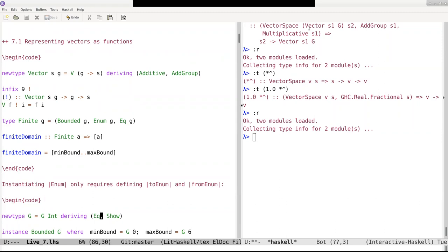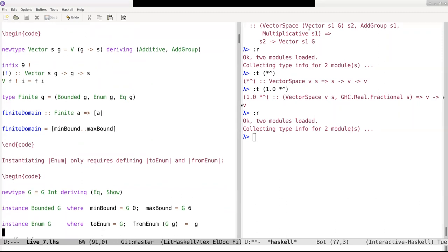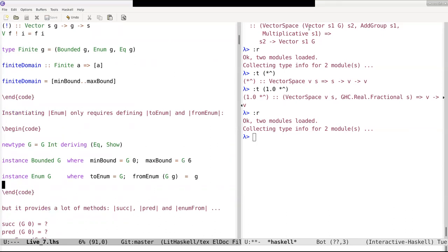There is a rather clever characterization here of finite types as those types that fulfill the predicate of being bounded, of being enumerable and then for some technical reasons that we will see later to be comparable by equality. And there is a declaration of a function or in fact of a value called finite domain that for every type which is finite, it just returns a list of values of that type. It flattens all the inhabitants of that type into a list.